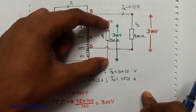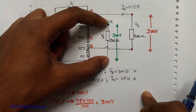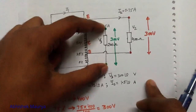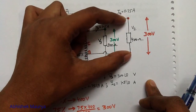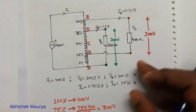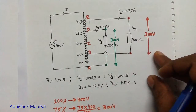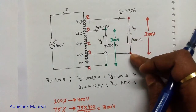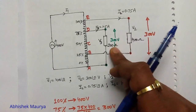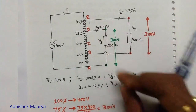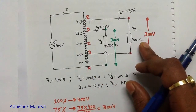This 300V will be available across the 200Ω resistor, and the voltage available across the 400Ω resistor will also be 300V. We can now calculate the load currents: 300V divided by 400Ω equals 0.75A, and 300V divided by 200Ω equals 1.5A. So we have calculated the currents flowing in the 200Ω and 400Ω resistors.